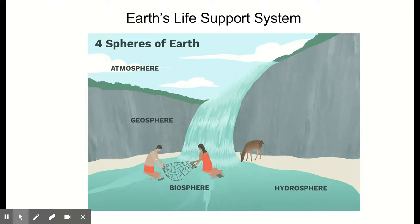The geosphere consists of the earth's intensely hot core, a thick mantle composed mostly of molten rock, and then a thin, cooled, solid outer crust — that's where we live. Most of the geosphere is in the earth's interior, but its upper portion contains non-renewable fossil fuels and minerals, as well as renewable soil chemicals and nutrients that organisms need to live, grow, and reproduce.